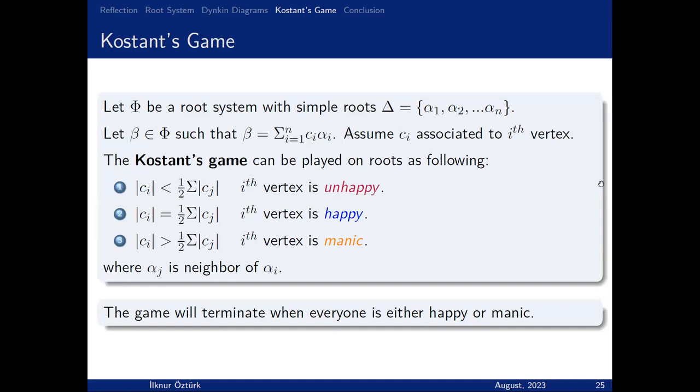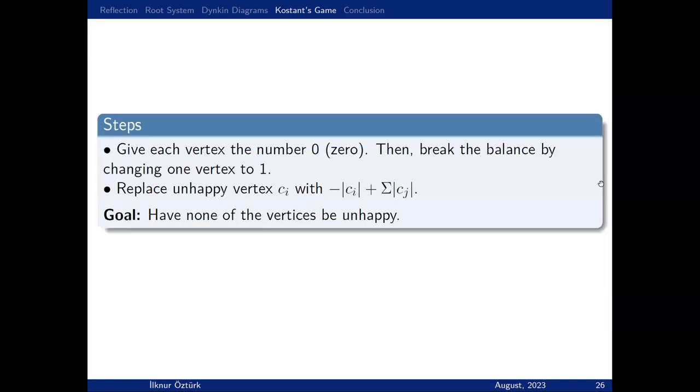The game we played is Kostant's game. This is the full statement. We've already played, so I will not focus on this slide, but you can come back and play it yourself. In our game, the game terminates when everyone is either happy or manic. In other words, our goal is to have none of the vertices be unhappy.